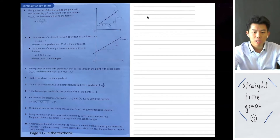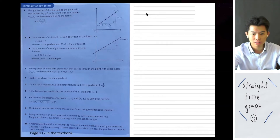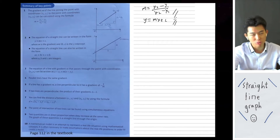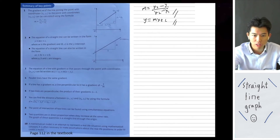Basically, all you have to know about this chapter is the gradient formula: m equals y2 minus y1 over x2 minus x1, and y equals mx plus c. That's pretty much all you have to know. The first part is the gradient, and the second part is the equation for a straight line.